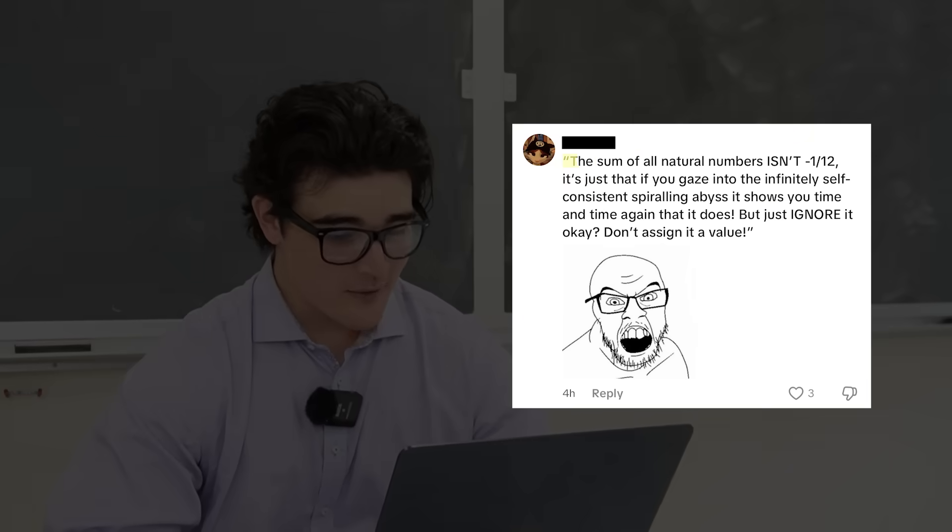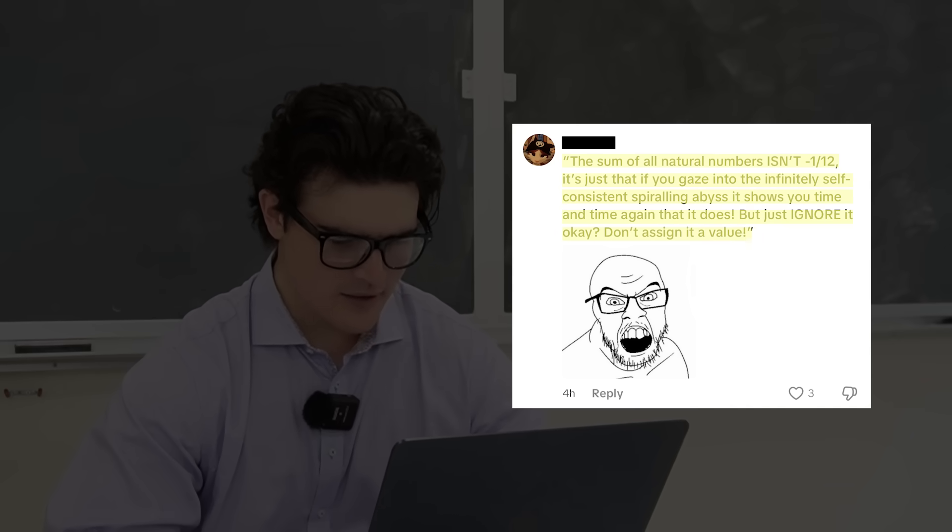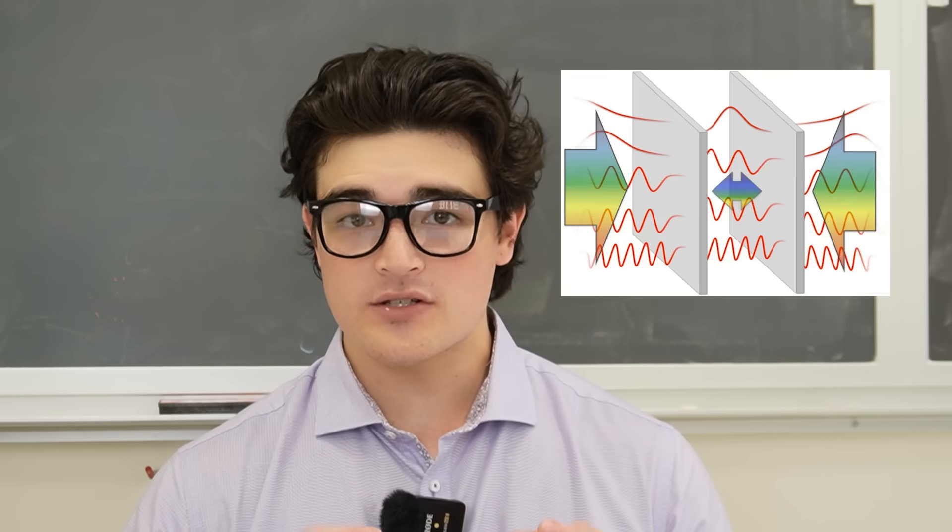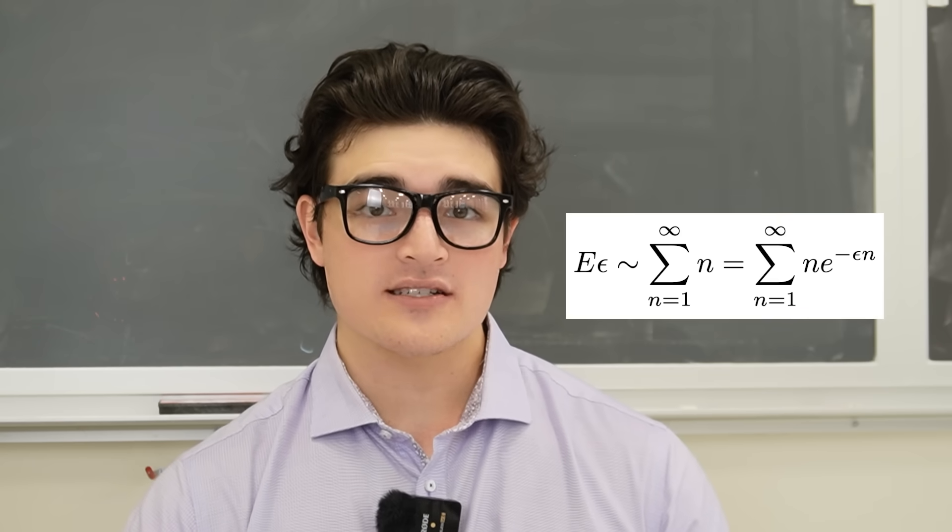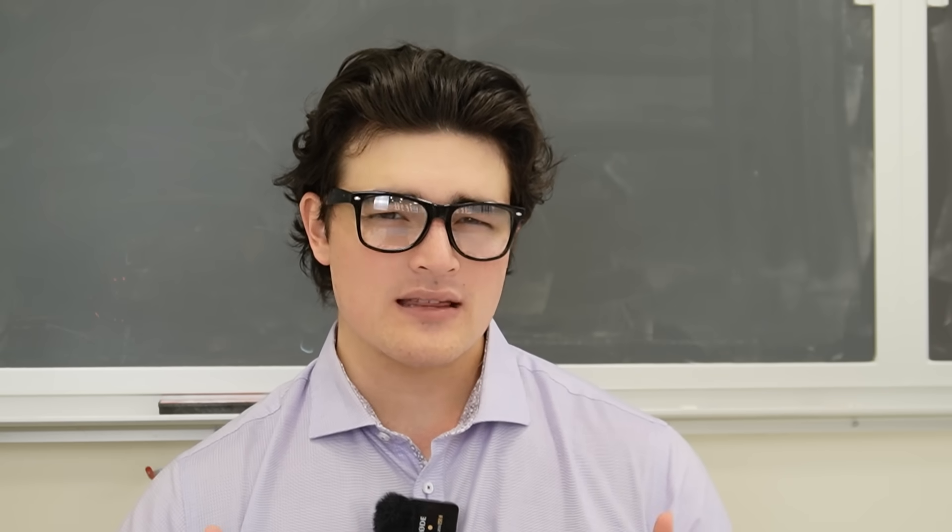The first comment reads: The sum of all natural numbers isn't negative 1 on 12, it's just that if you gaze into the infinitely self-consistent spiraling abyss, it shows you time and time again that it does. But just ignore it, don't assign it a value. I assume that by showing up time and time again, you're referring to its very specific use in the Casimir effect, which uses the extended Riemann-Zeta function to regularize and assign a finite value to the sum of all natural numbers. But that doesn't mean they're equal.